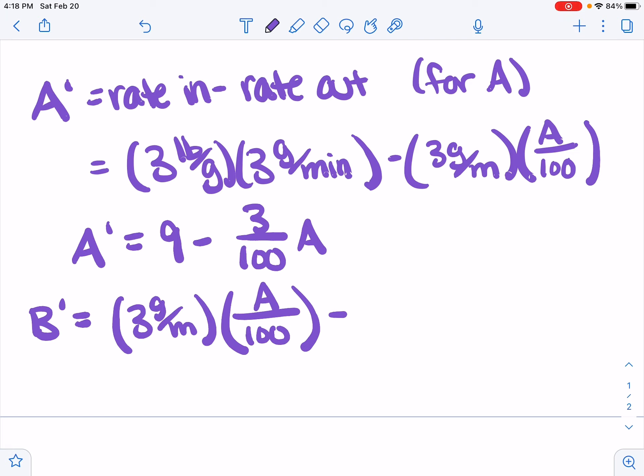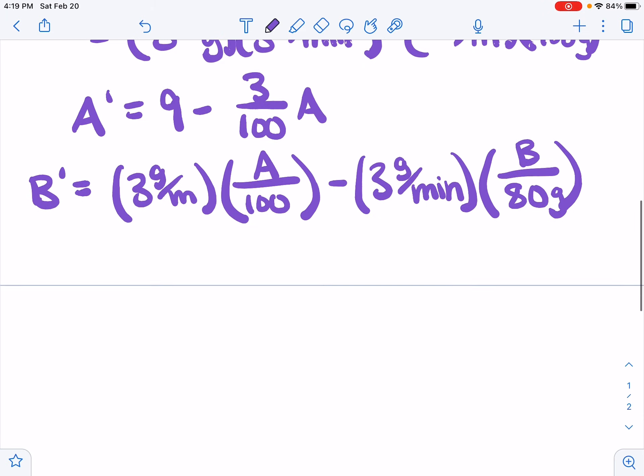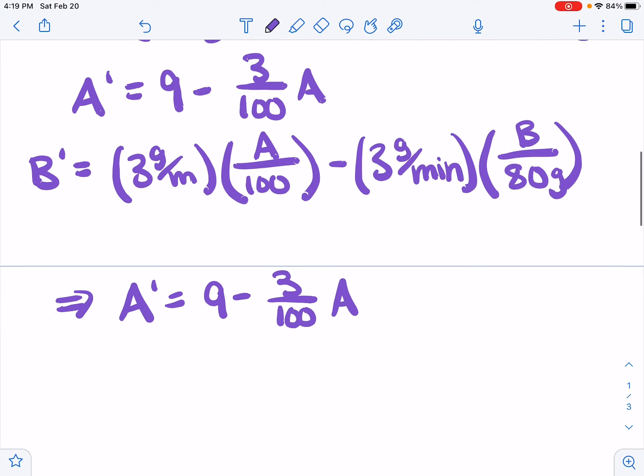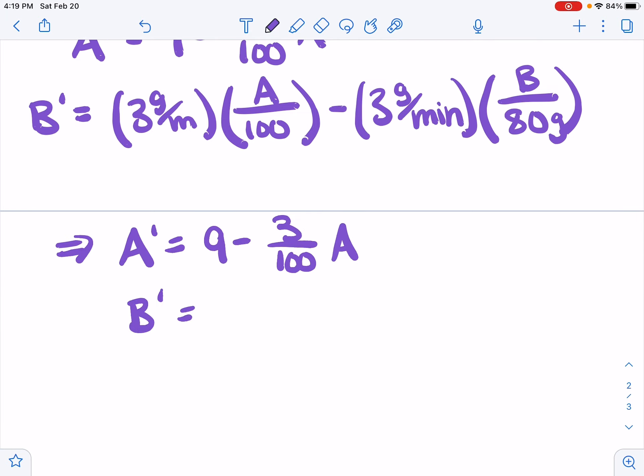Now what's leaving tank B? What's leaving tank B is leaving at 3 gallons per minute. All of the flow rates were the same in this problem to make it a little simpler. And what's the concentration that's leaving B? That's the amount of salt in B divided by the volume of B, that's 80 gallons. And so we have, in the end, A prime equals 9 minus 3 over 100 A, and B prime equals 3 over 100 A minus 3 over 80 times B. And that is our system.